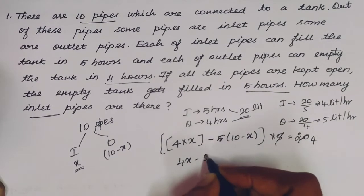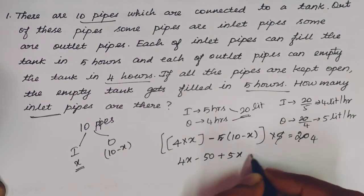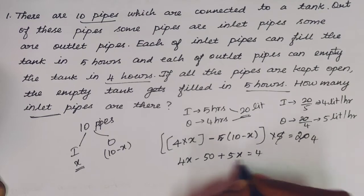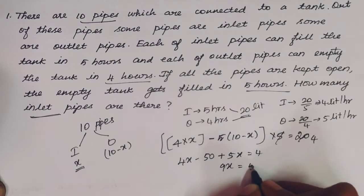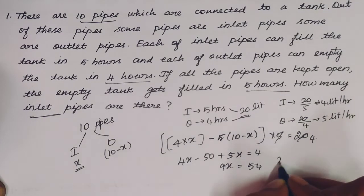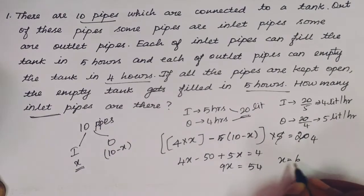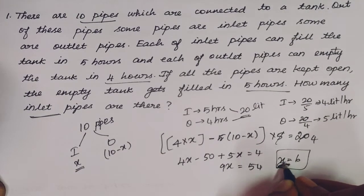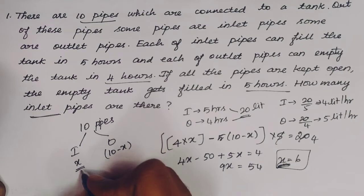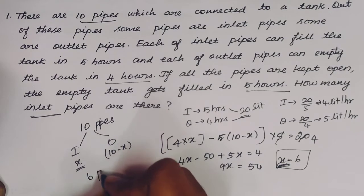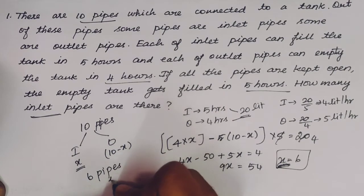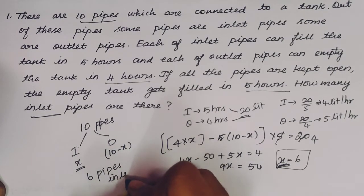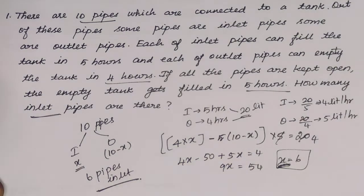Simplifying: 4x − 50 + 5x = 4, so 9x = 54, therefore x = 6. So x equals the number of inlet pipes, which is 6. Number of outlet pipes = 10 − 6 = 4 outlet pipes.